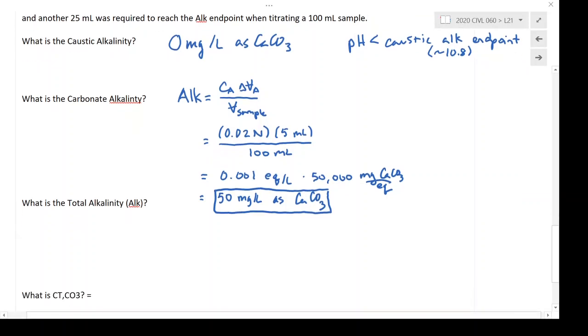Okay, so next we're going to solve for the total alkalinity. And here our alkalinity is, we're going to use the same equation as above, but what changes is the delta V, or the volume required to get to that total alkalinity endpoint. Same acid concentration, and